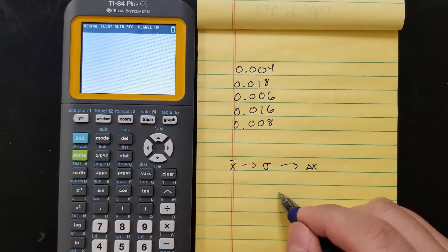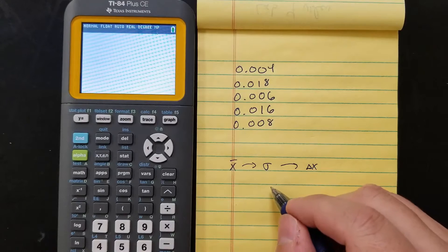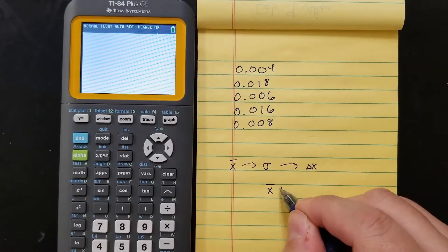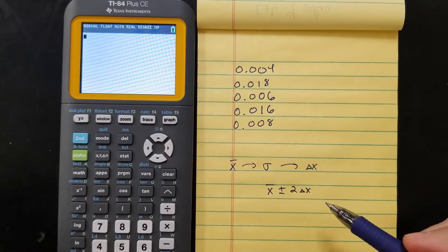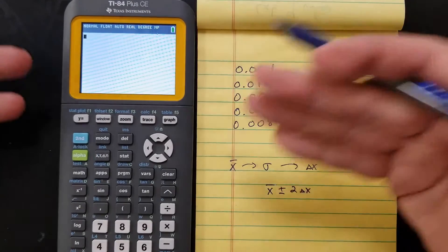And then you have to use that to get a confidence interval. The confidence interval looks like the average plus or minus two times the standard uncertainty. Instead of having to do all this mess, you can use your calculator.